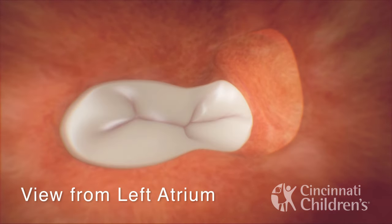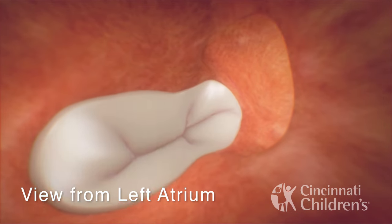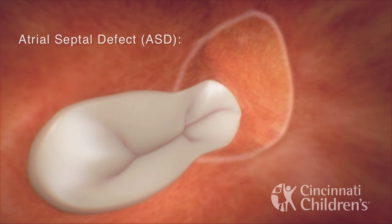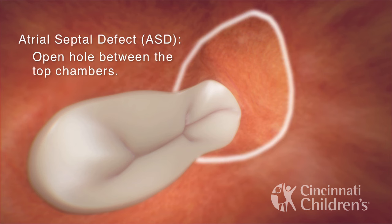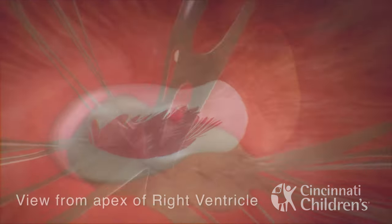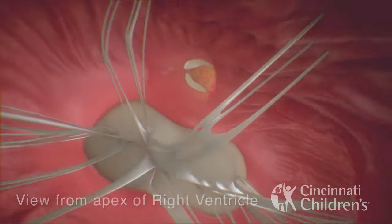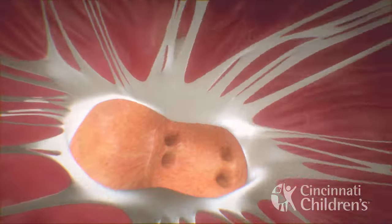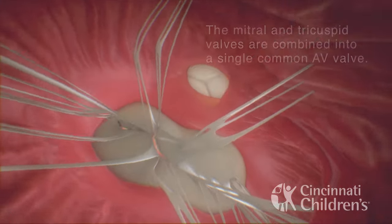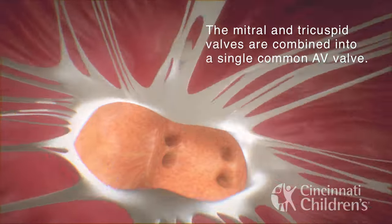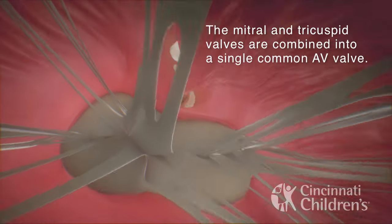This is the view from the left atrium. An atrial septal defect, or ASD, is a completely open hole between the top chambers. This is the view inside the heart from the apex of the right ventricle. The mitral and tricuspid valves are combined into a single common AV valve.